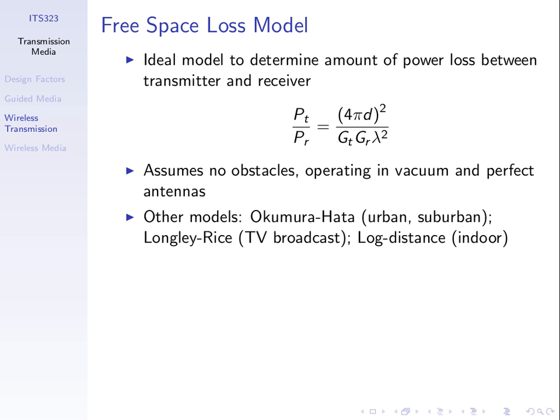That relationship holds with isotropic antennas. Friis derived the loss factor for isotropic antennas: L equals (4πd)² divided by λ², where d is the distance between transmitter and receiver. If I know the frequency, I can find the wavelength using λ = c/f (speed of light divided by frequency), then calculate how much signal we lose in free space with no other obstacles or atmospheric effects.